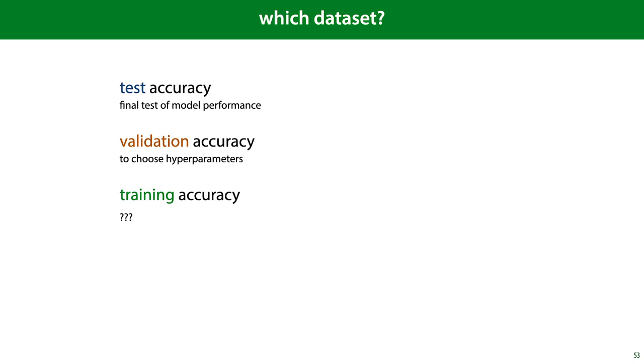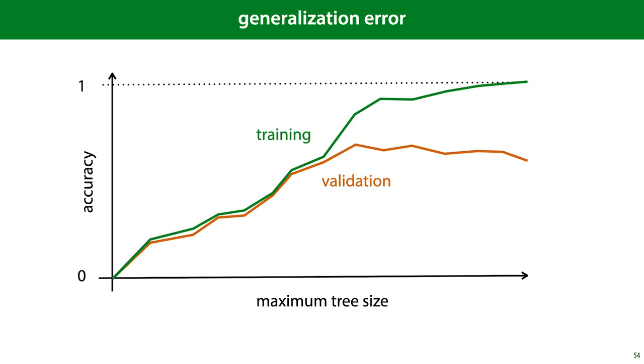Now remember that in the first lecture I said, emphatically, that you should never judge your model on how it performs on the training set. Why then would you ever want to compute the training accuracy or any other metrics on the training data? The reason to do this is to get a sense of the generalization error.